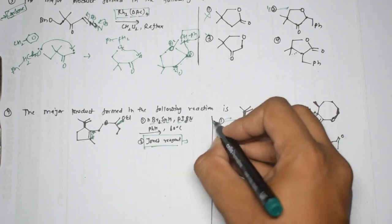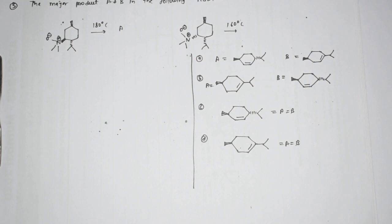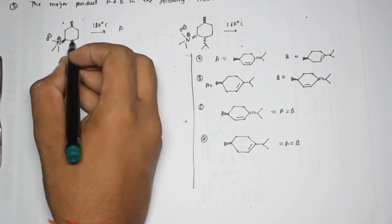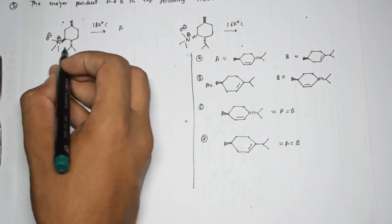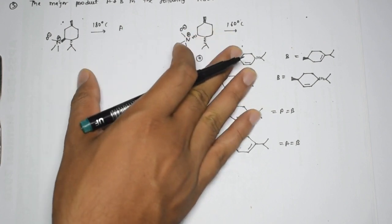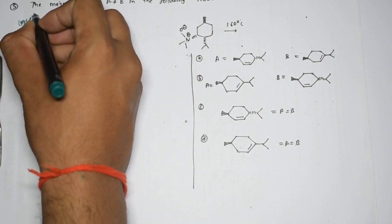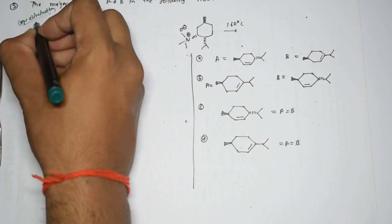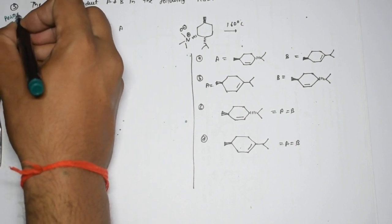The first option is correct in this case. The next question asks for major products A and B in the following reaction - this is an example of the Cope elimination reaction. To understand Cope elimination, you must study pericyclic reactions well.